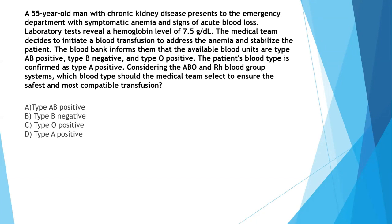Considering the ABO and Rh blood group systems, which blood types should the medical team select to ensure the safest and most compatible transfusion? A 55-year-old man with chronic kidney disease presents to the emergency department with symptomatic anemia and signs of acute blood loss. Labs reveal a hemoglobin level of 7.5. The medical team decides to initiate a blood transfusion. The available blood units are type AB positive, type B negative, and type O positive. The patient's blood group is confirmed as type A positive.